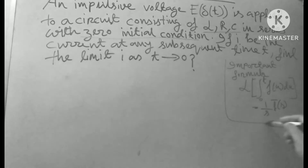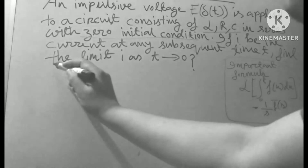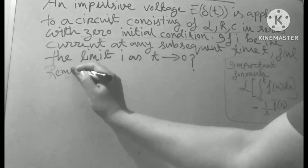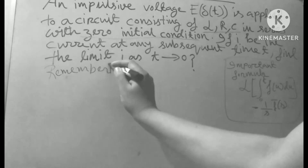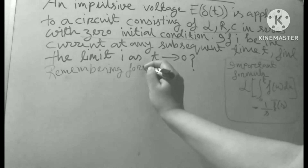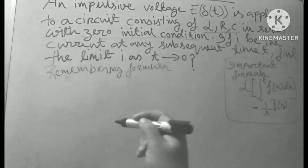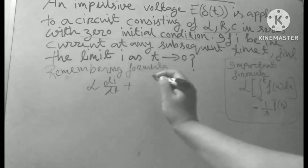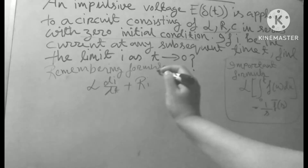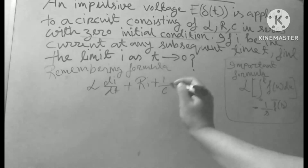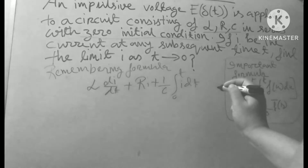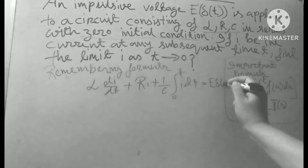This formula is an important formula to remember. The formula of the LCR circuit is: L·(di/dt) + R·i + (1/C)·∫₀ᵗ i dt = E·δ(T). This is the governing differential equation for the series LCR circuit.